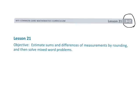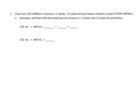This is grade 3 module 2 lesson 21. We're going to be estimating sums and differences using word problems. In this problem there are 153 milliliters of juice in one carton and a three-pack of juice contains a total of 459 milliliters. Estimate and then find the total amount of juice in one carton and the three-pack.